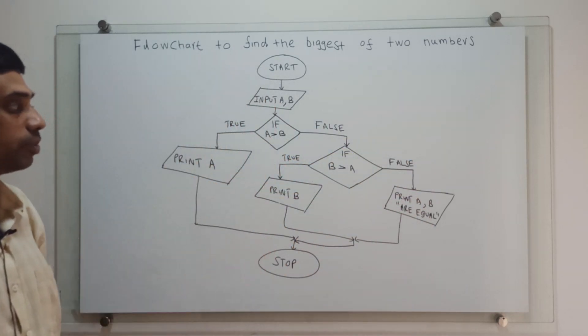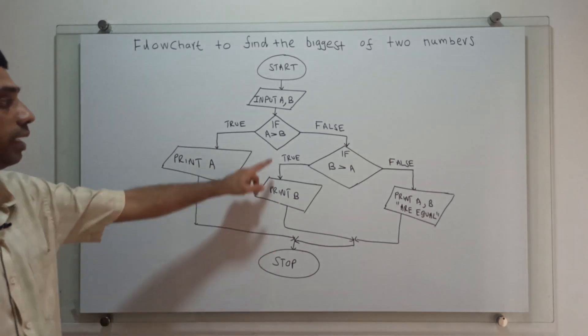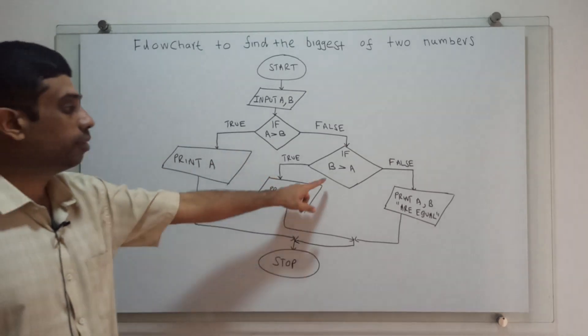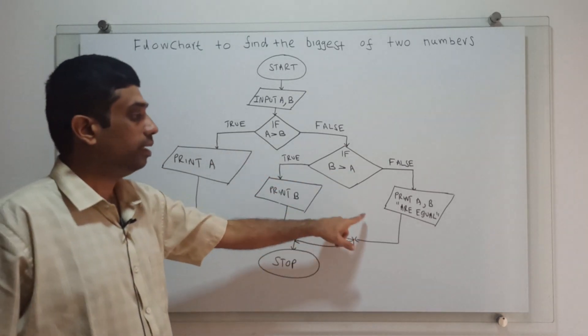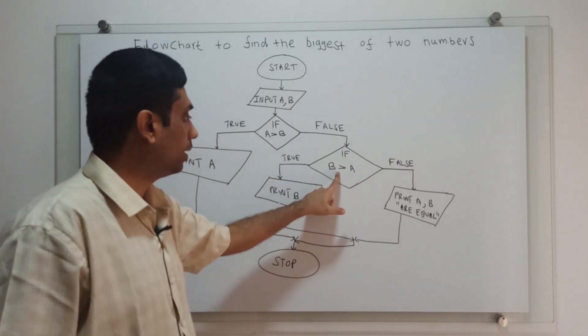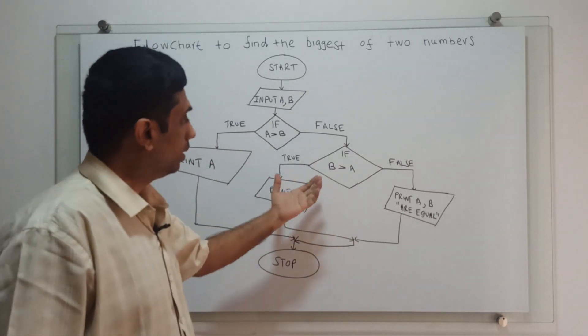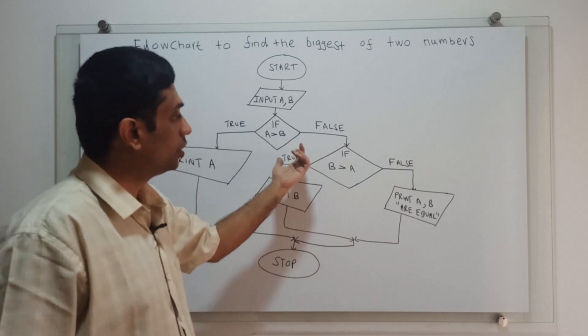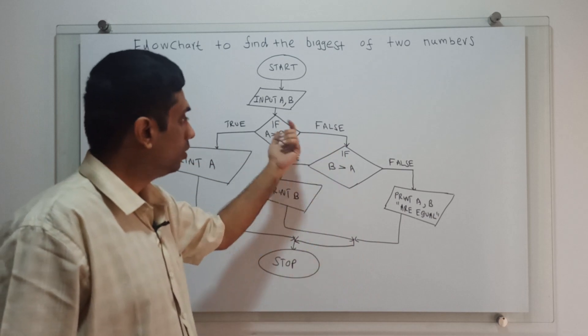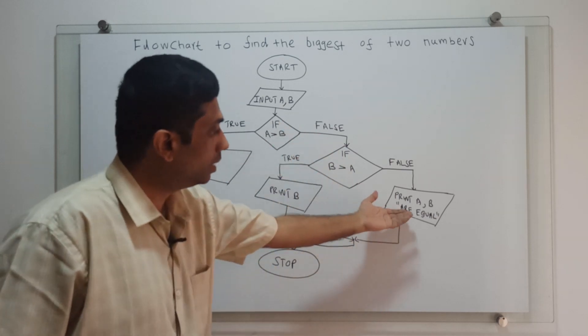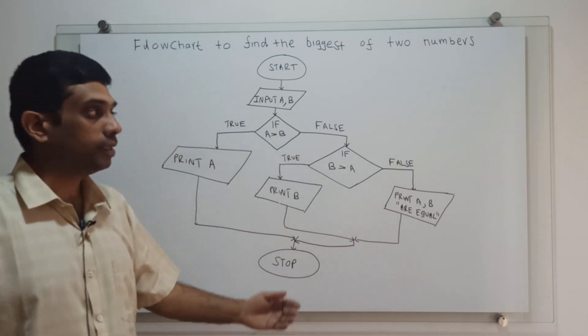We check all the possible conditions: A greater than B, and B greater than A. Both conditions are checked, and if both are false, then A and B are equal.